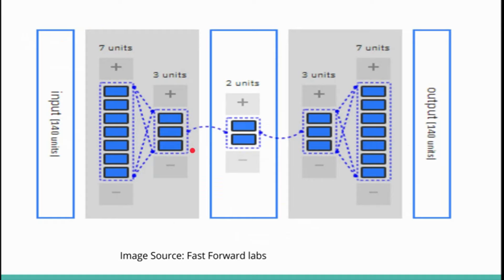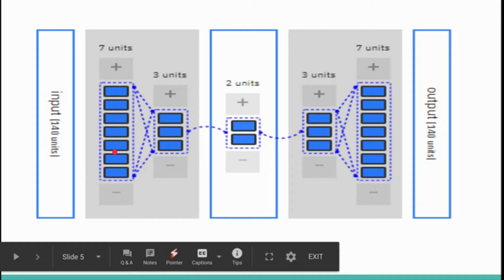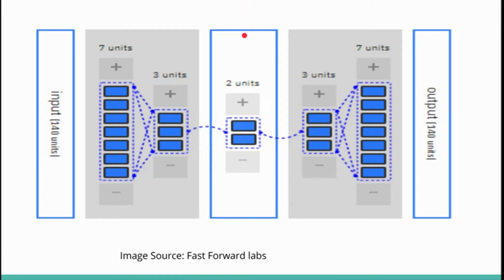For a feed-forward autoencoder example: with 140 input variables, you downsample to 7 units, then 3 units, then a 2-unit bottleneck layer — which also serves as a dimensionality reduction layer. Then you upsample back through 3 units, 7 units, and an output layer the same size as the input. This is the lossy compression analogy, giving a reconstruction error between output and input.